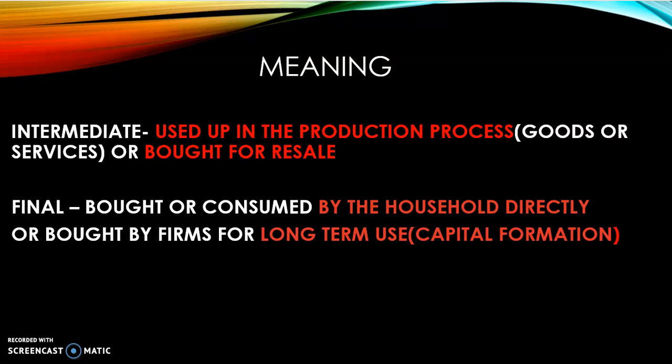Similarly, if I am a service provider — if a school provides services, or a hospital provides a service — then items used in providing that service, like a nurse's uniform or chalks and dusters used by teachers, are intermediate expenditure. So intermediate goods are used up in the production process, whether it is production of services or goods.